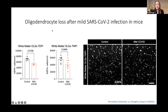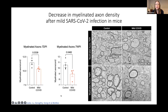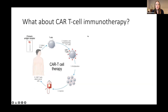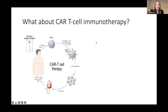Together with this neuroinflammation, we see decreased hippocampal neurogenesis and the same loss of oligodendrocytes we observe in the context of cancer chemotherapy after mild SARS-CoV-2 infection in mice. This decrease in white matter oligodendrocytes persists for at least seven weeks after clearance of infection, and together with decreased myelin-forming oligodendroglial cells, there is also a decrease in myelinated axons. So this paradigm of white matter selective microglial reactivity, neuroinflammation, and dysregulated hippocampal neurogenesis and oligodendrogenesis is present in both cancer therapy and in systemic inflammatory syndromes like COVID.